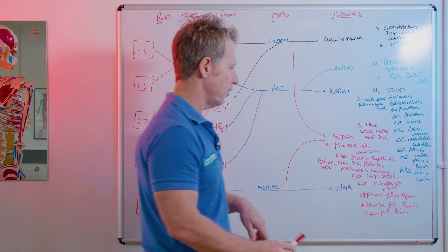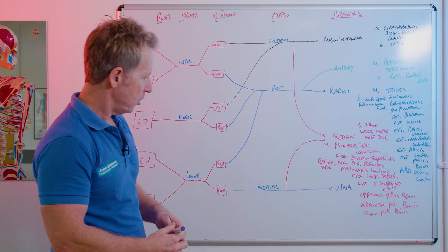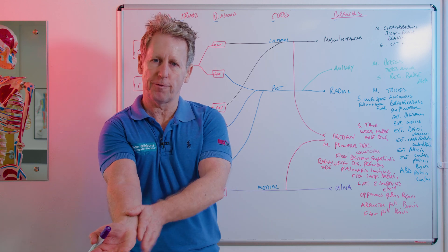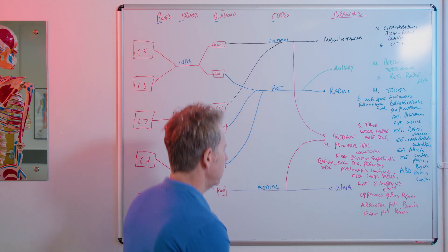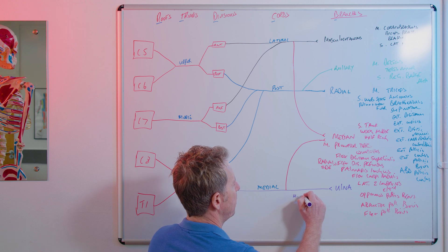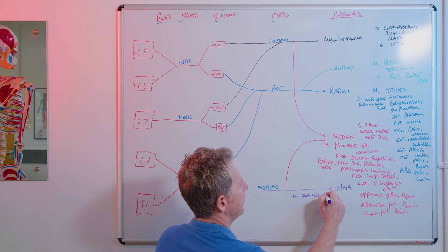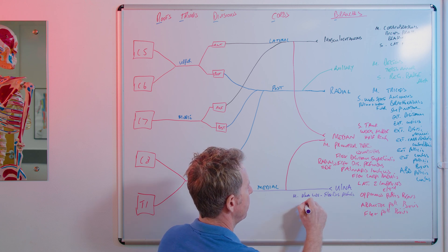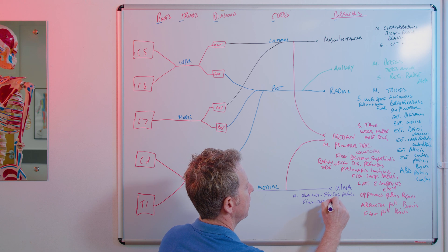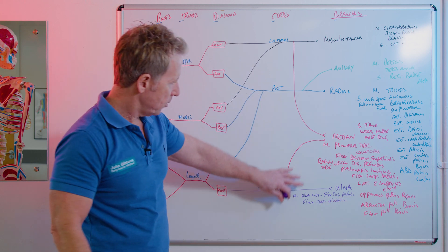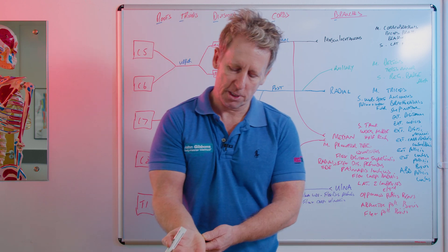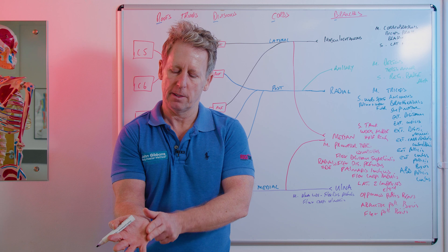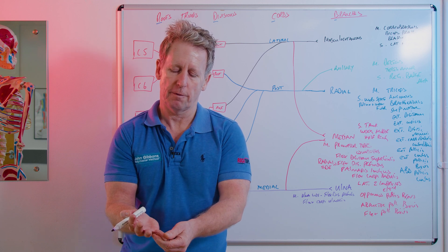Now the last one, the ulnar nerve. We already discussed that the flexor digitorum profundus is split — the median nerve supplies the radial side. Within the forearm, the ulnar nerve supplies the ulnar side of flexor digitorum profundus and also flexor carpi ulnaris. The ulnar nerve goes into the hand passing between the pisiform and the hook of hamate, forming the tunnel of Guyon or Guyon's canal. Sensory-wise it supplies the little finger and half the ring finger.